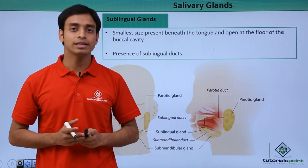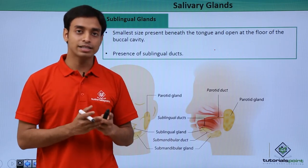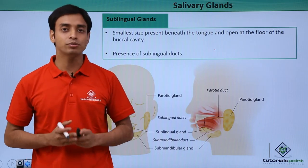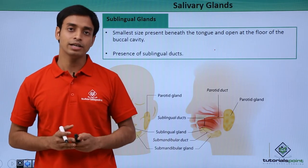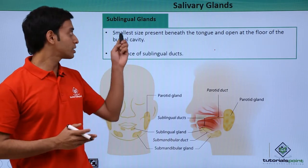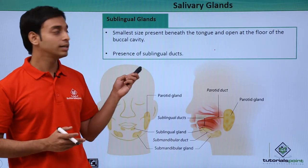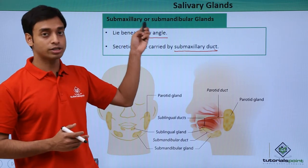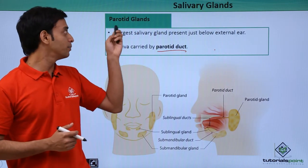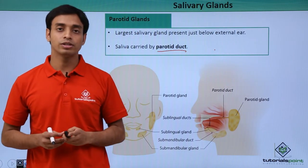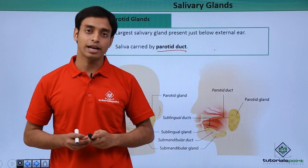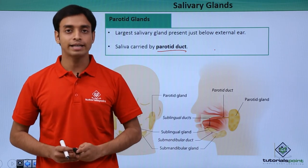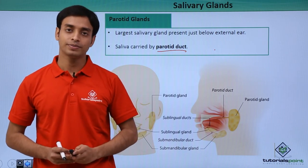In this video we have talked about the salivary glands as a digestive gland, covering three important types: the sublingual gland, the submaxillary or submandibular gland, and the parotid gland. I hope you have understood and liked this video. Thank you.